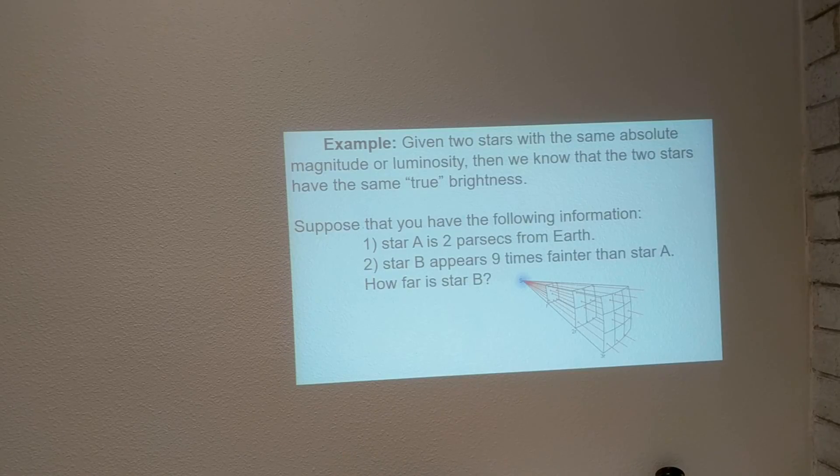and if you don't know what a parsec is, just think of it as some distance between stars. So star A is two parsecs from the Sun and Earth. Star B appears nine times fainter than star A. We don't know how far star B is, but it's nine times fainter than star A.